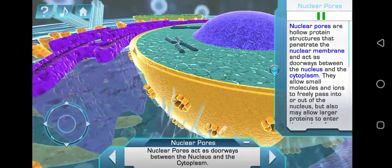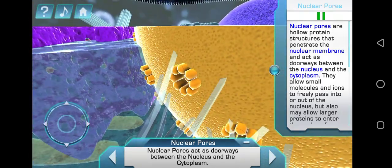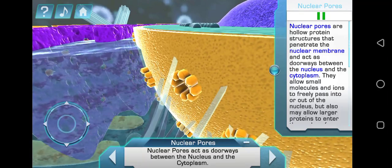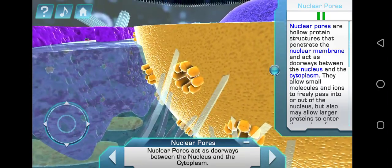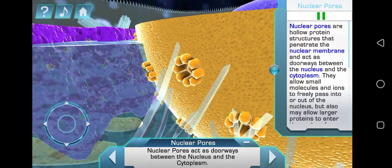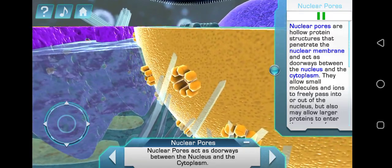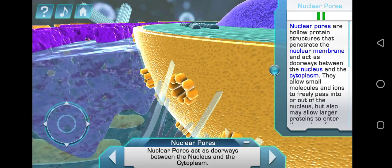Nuclear pores are hollow protein structures that penetrate the nuclear membrane and act as doorways between the nucleus and the cytoplasm. They allow small molecules and ions to freely pass into or out of the nucleus, but also may allow larger proteins to enter.